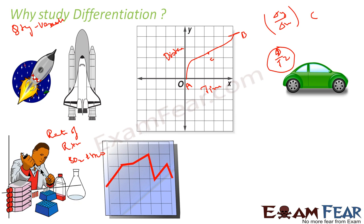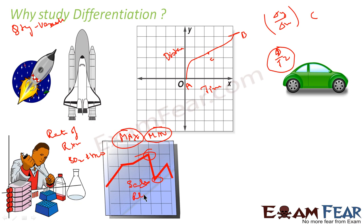If you are not in the field of science but in economics, and you are a manager of a company with a sales chart, differentiation is very useful. You can find the maximum and minimum values — for example, on which date you get maximum sales and on which date you get minimum sales. This applies to sales, revenue, and cost. At the management level, almost everything is represented using graphs, and differentiation lets you find the maximum and minimum values. The slope is also important: you need differentiation to find the rate at which your sales are going up or down.